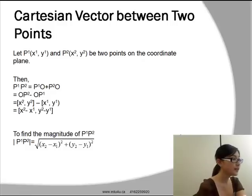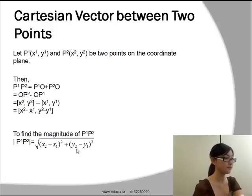To find the Cartesian vector between two points, let P₁(x₁,y₁) and P₂(x₂,y₂) be two points on a coordinate plane. Then, to find the magnitude of P₁P₂, it will be equal to √[(x₂-x₁)² + (y₂-y₁)²].